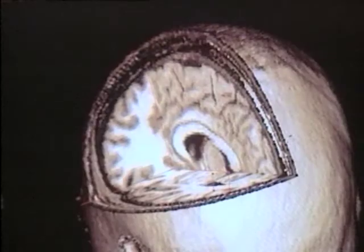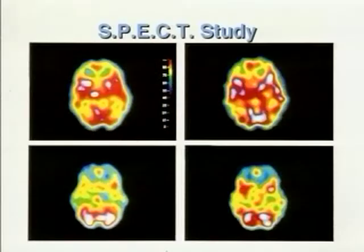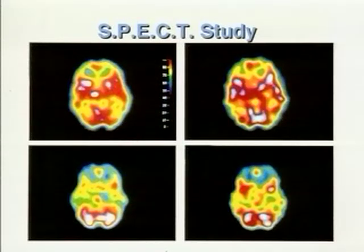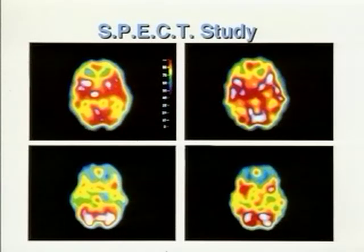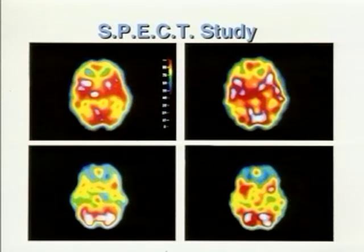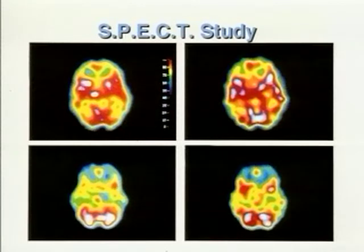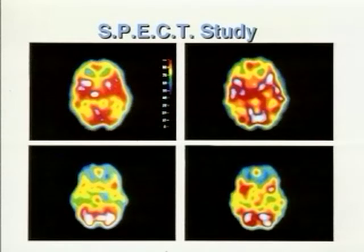One of the most convincing studies of the brains of psychopaths involves single-photon emission computerized tomography, or SPECT. In this process, harmless amounts of radioactive tracers are injected into a subject's bloodstream, and activity in specific areas of the brain can then be observed. The white and red colors indicate the areas of highest mental activity, while green and blue indicate less activity.